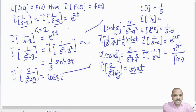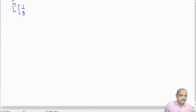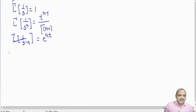The first formula: L⁻¹{1/s} = 1. Second: L⁻¹{1/sⁿ} = t^(n−1) / Γ(n−1). Third: L⁻¹{1/(s²−a²)} = (1/a) sinh(at).